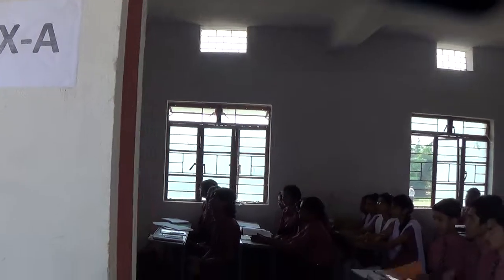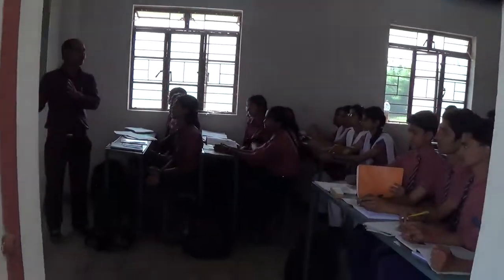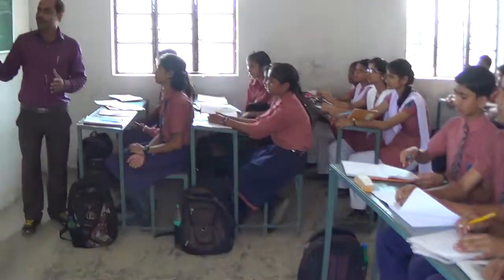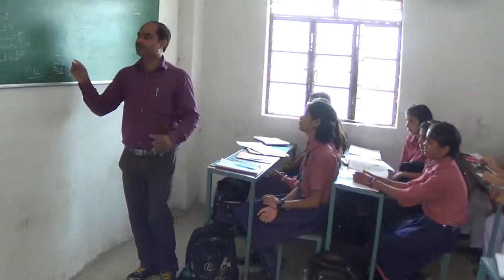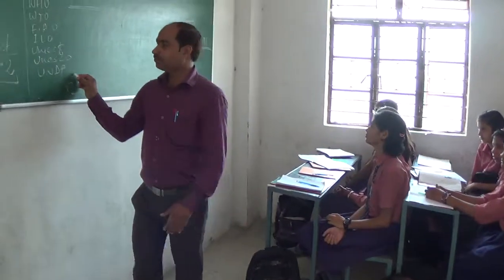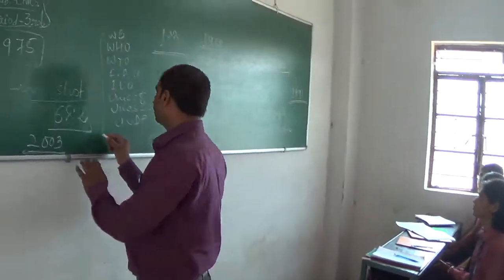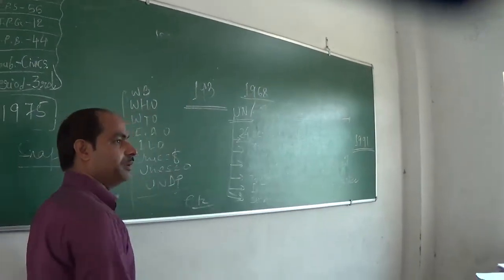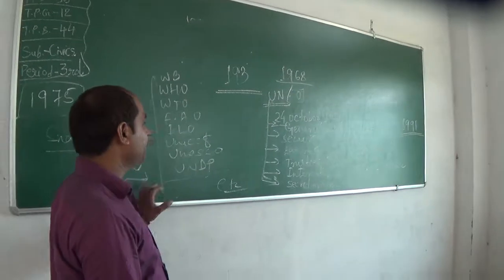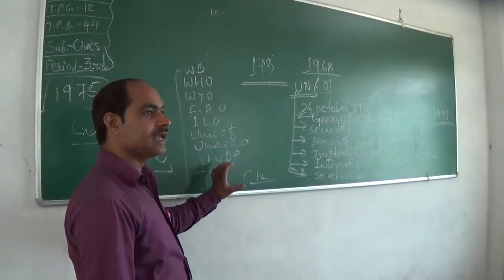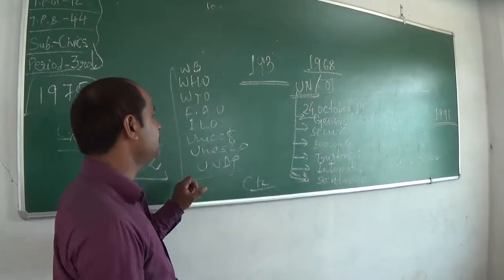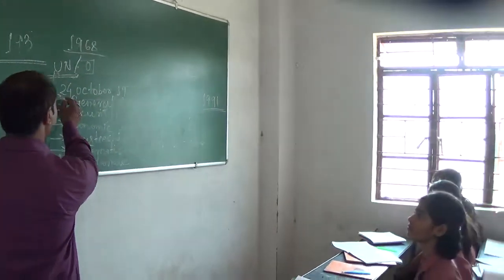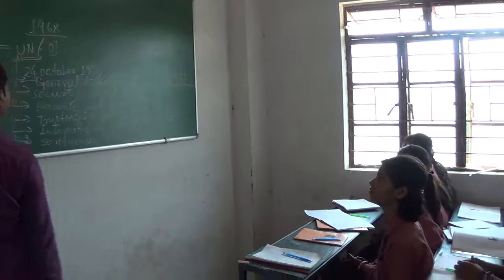The United Nations was organized just after the end of the Second World War, as there was the problem of international peace. That is why the United Nations was organized, and it was founded on 24 October 1945.